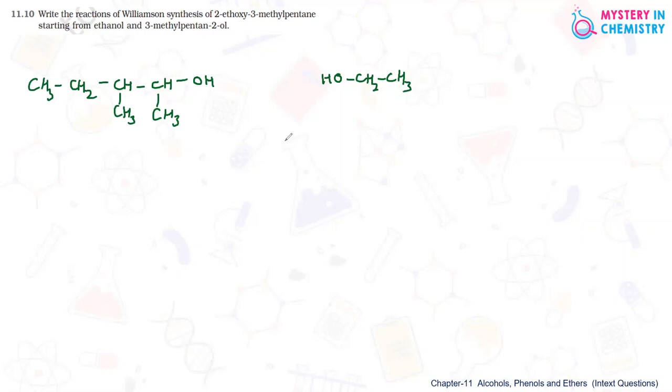Now, for the Williamson synthesis we know that an alkyl halide reacts with an alkoxide ion. Moreover, we know one more thing that is the reaction is following SN2 mechanism.